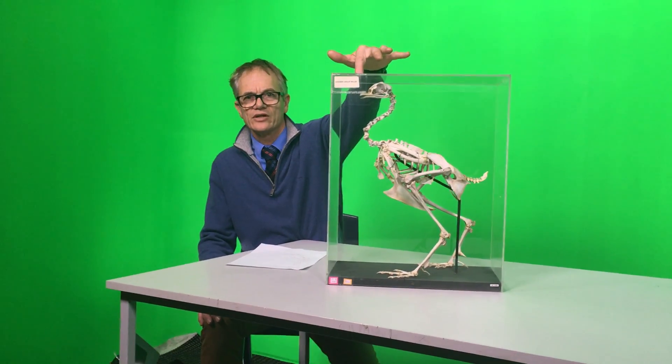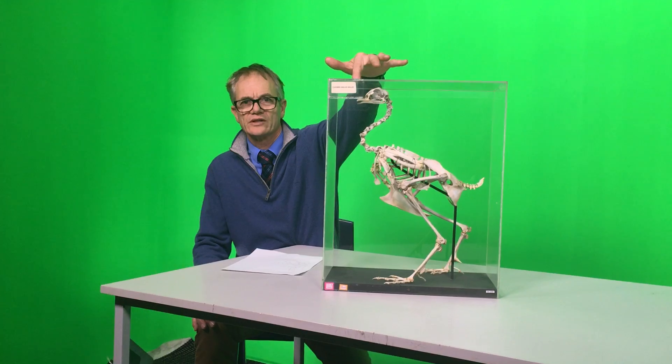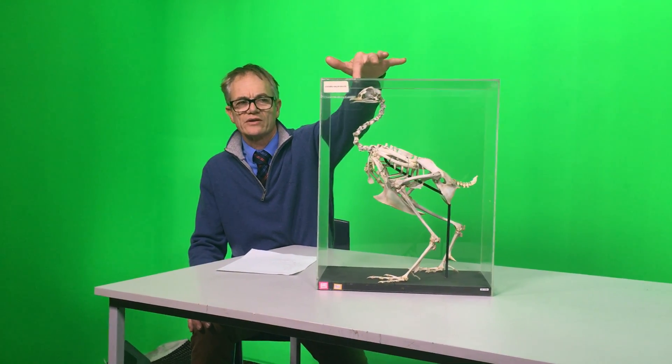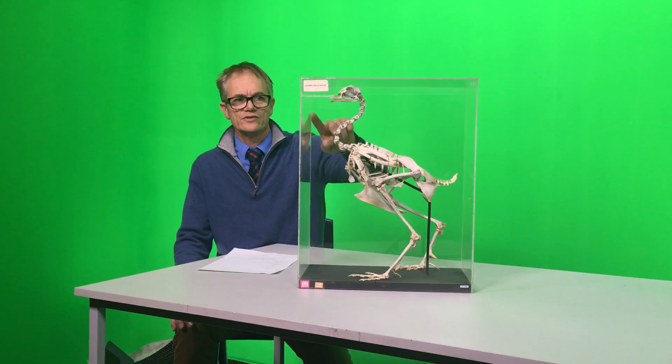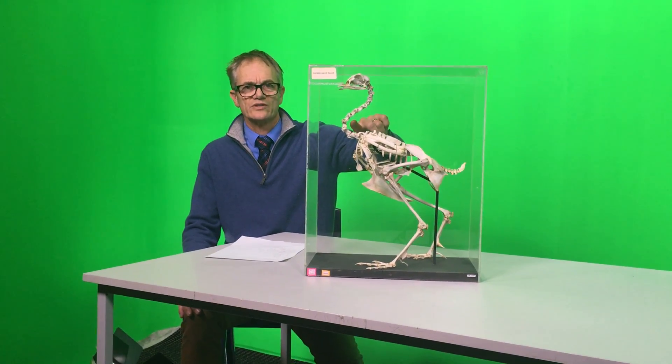The beak has no teeth. The bird needs to be light so there are no teeth. The neck is longer and curved which helps a bird when it's flying.